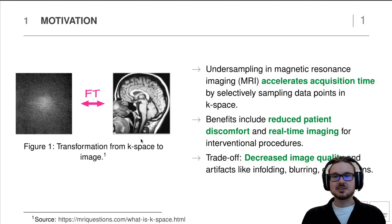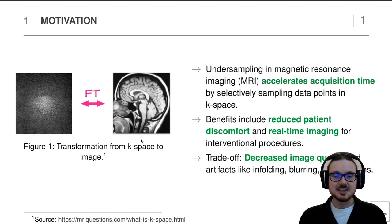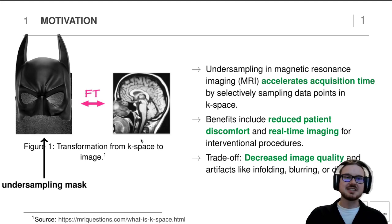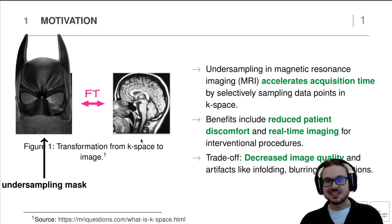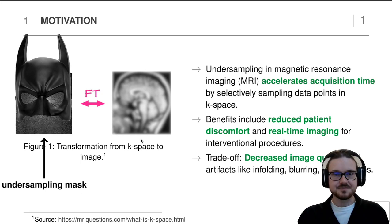A technique applied to address this is called undersampling, where you accelerate acquisition time by selectively sampling data points in k-space. This reduces patient discomfort and also enables time imaging for interventional procedures. In practice, you apply some kind of mask on k-space that determines which points you would like to sample — this is called an undersampling mask. As a trade-off, you receive an image with decreased quality and artifacts like unfolding, blurring, or distortions.